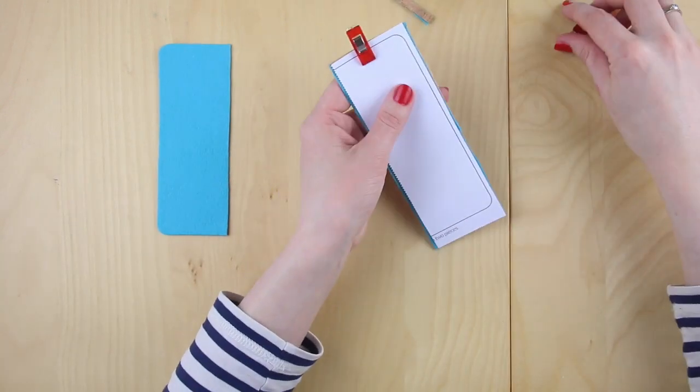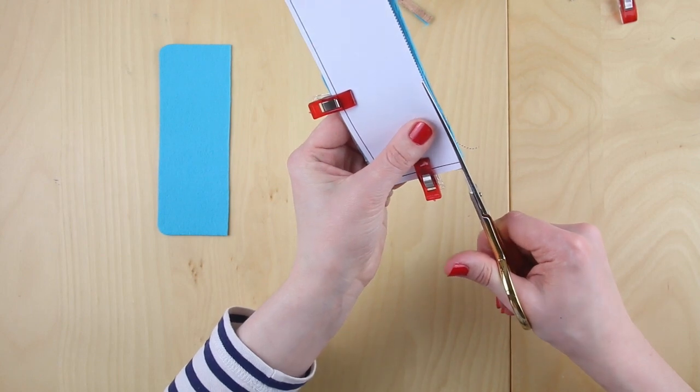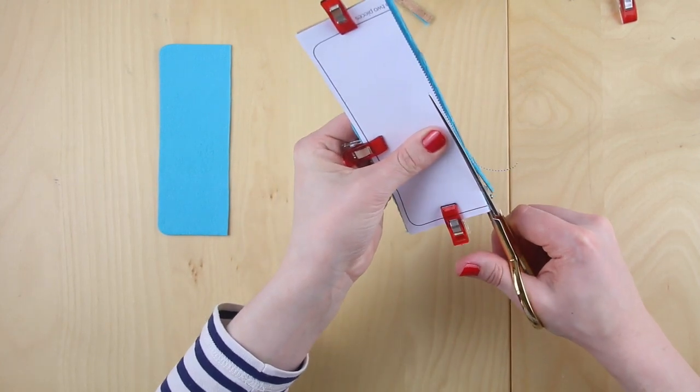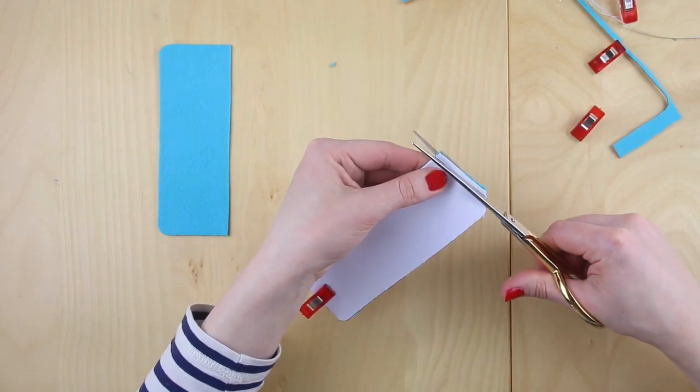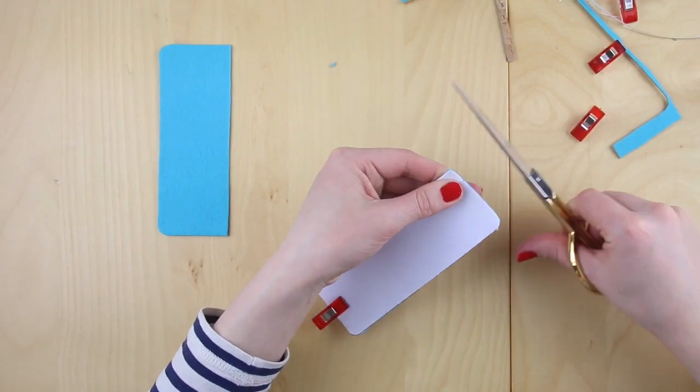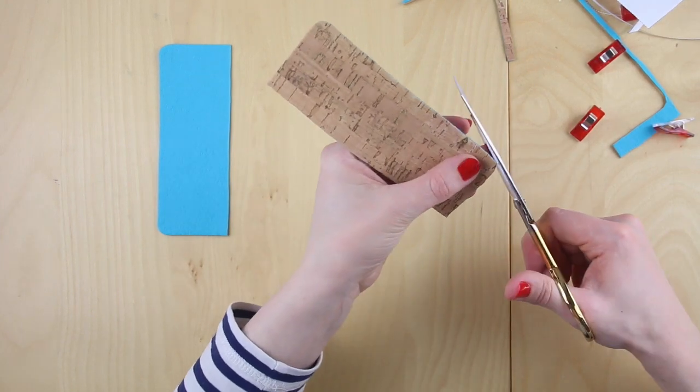And do the same for the other side again trim on the inside again so that you get a nice neat edge. And all the way around. And as before just around the corners if they're not quite how you want them.